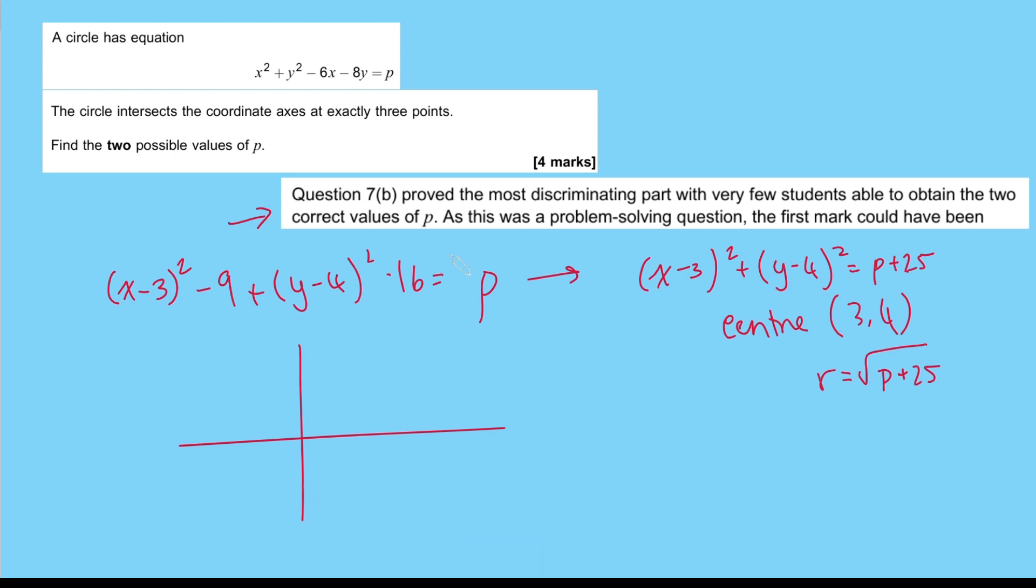So our circle has a center (3,4). That is fixed. That is independent of p. So let's draw roughly where that is. So if I make 3 roughly there and 4 roughly there, the center of our circle is maybe there. It doesn't have to be perfectly to scale.